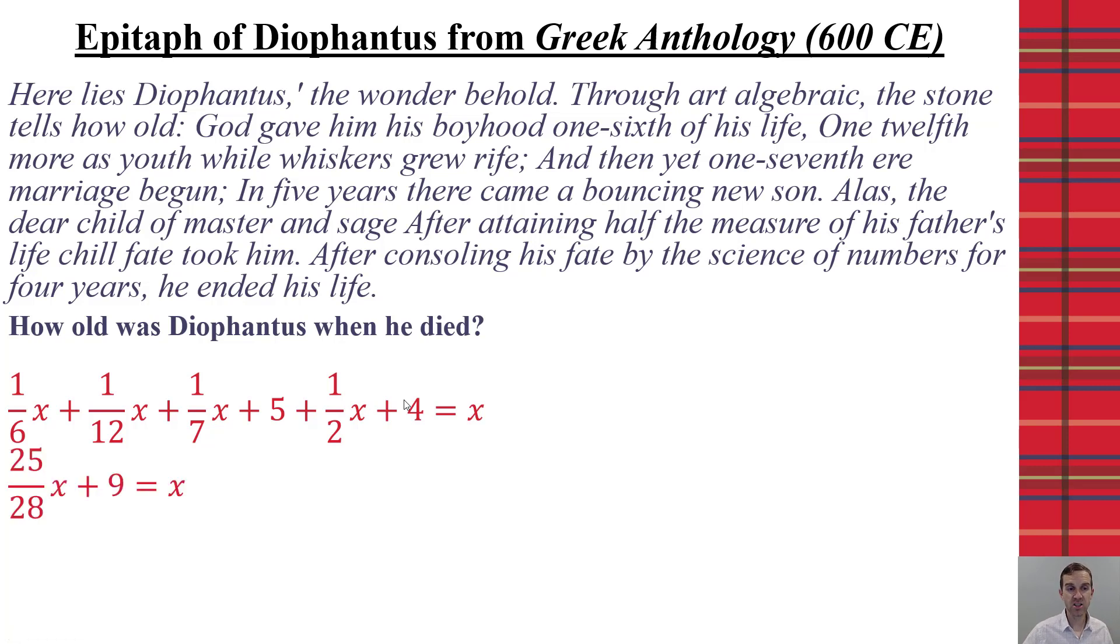So, we have our equation. We can then simplify this. We're going to subtract that over to one X, and we get three twenty-eighths. We're going to multiply both sides by twenty-eight-thirds to find that Diophantus was eighty-four years old.